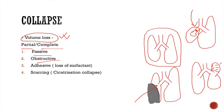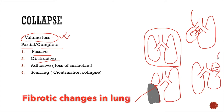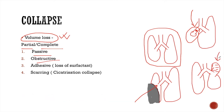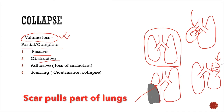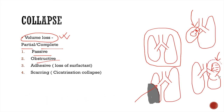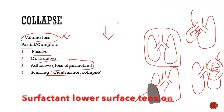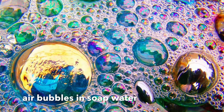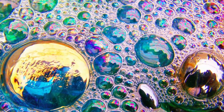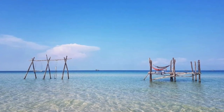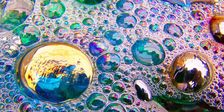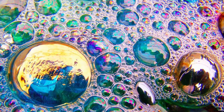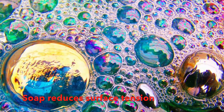Volume loss may also occur when there are fibrotic changes in the lung. With fibrosis and scar in the lung, the scar pulls part of the lung and leads to volume loss. This is called fibrotic collapse or cicatrization collapse. Volume loss may also occur when there is loss of surfactant. Surfactant lowers the surface tension and helps the lung expand. Just imagine air bubbles in soap water — air bubbles don't form in plain water.